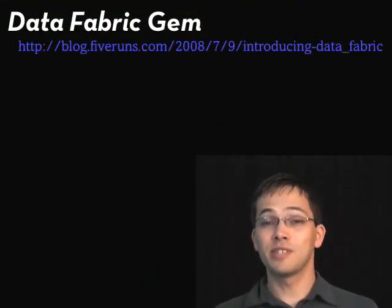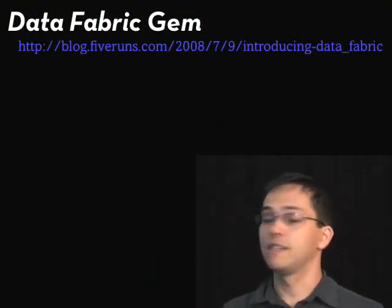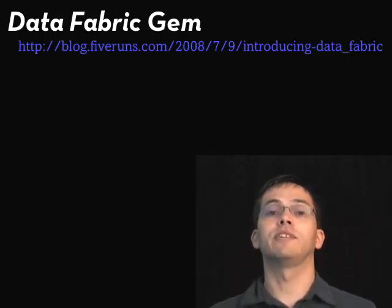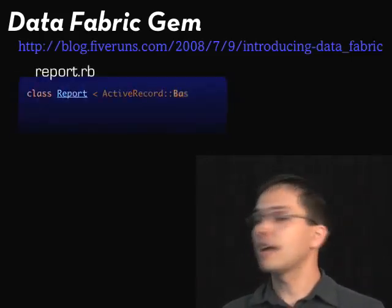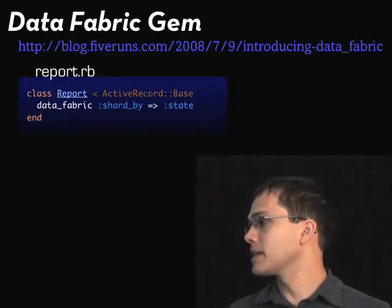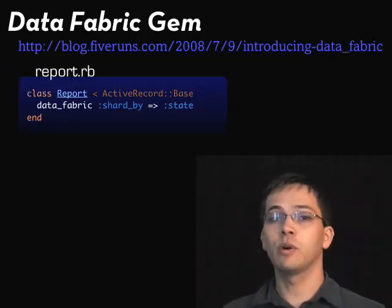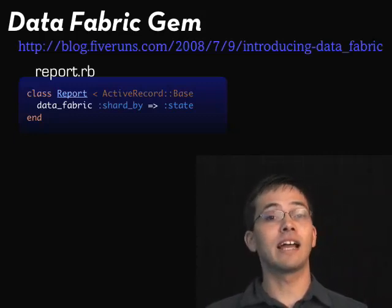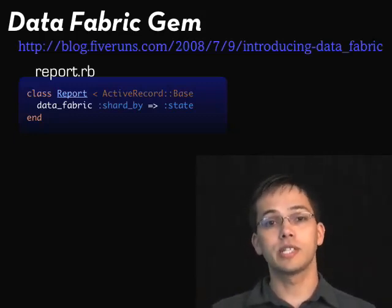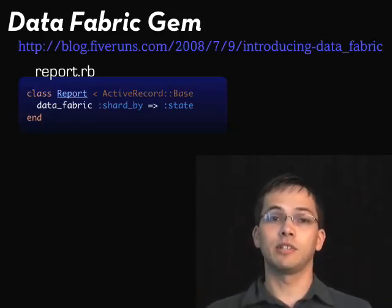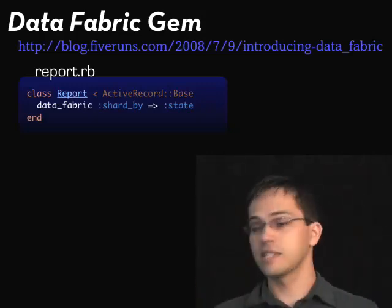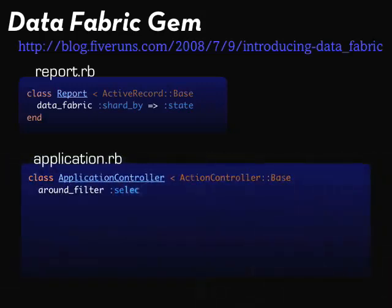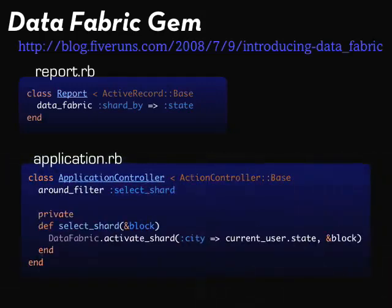If you want to start sharding your Rails app, there's a gem called the Data Fabric Gem, which we talked about in a previous screencast. It allows you to specify per model how you want it sharded. Here we're sharding reports by state, so we have a different database per state. In your database.yaml, each database is named for a state. In your application controller, you simply have an around filter which does the lookup — for the current user, what state are they in? — and puts them in the right database.